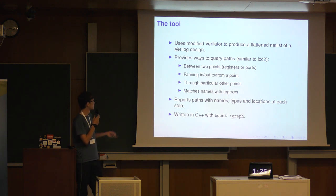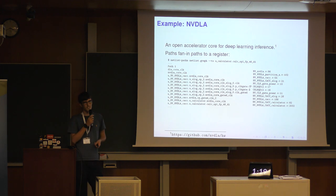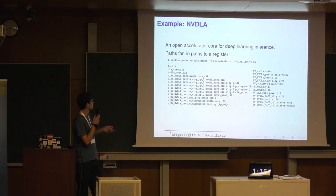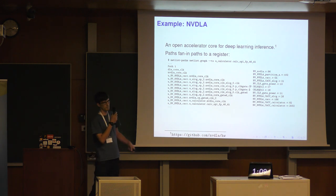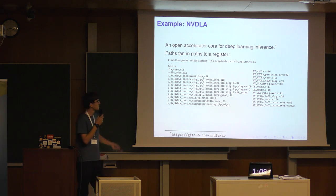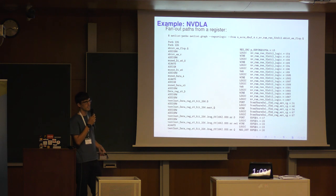I tried this in C++ on the Nvidia deep learning accelerator they released a couple of years ago. Here's a path report showing all the paths feeding into a particular register — you can see it goes through a whole bunch of modules and shows all the intermediate net names.